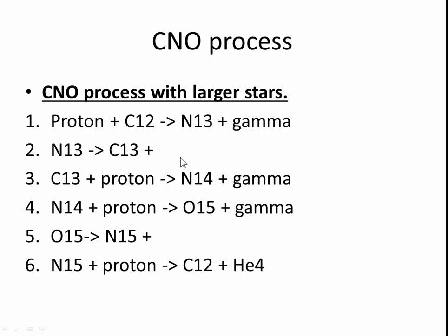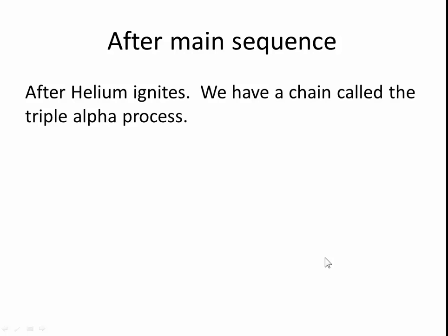Nitrogen-13 produces carbon-13. You should be able to figure out what that is. Carbon-13 and a proton fuses to make nitrogen-14. Nitrogen-14 and a proton produces oxygen-15. The oxygen-15 fuses to produce nitrogen-15 plus one other. You can figure that out too. Nitrogen-15 plus proton makes 16 units, so it's carbon-12 plus helium-4.